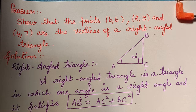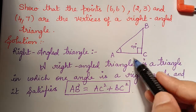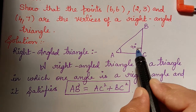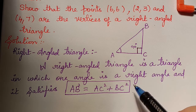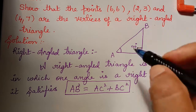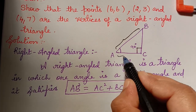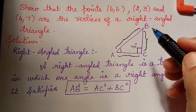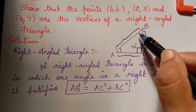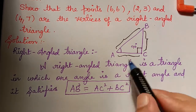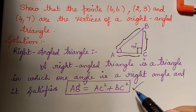A right-angled triangle is a triangle in which one angle is a right angle — one of the angles will be 90 degrees. We use the Pythagoras theorem: in a right-angled triangle, the square of the hypotenuse AB is equal to the sum of the squares of the other two sides, that is AB² = AC² + BC². If we prove this, it is sufficient to prove that the given triangle is a right-angled triangle.